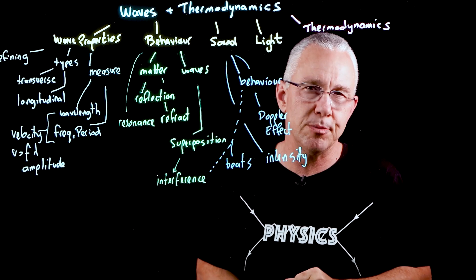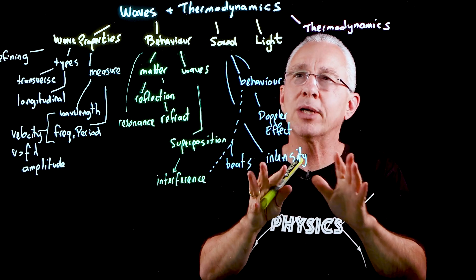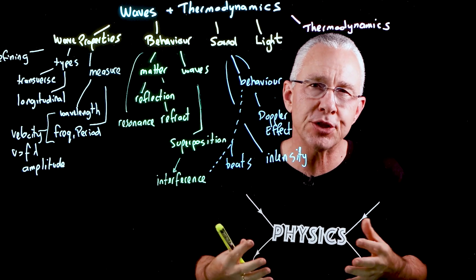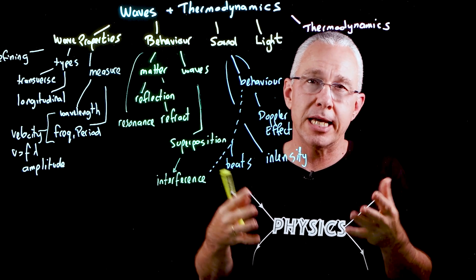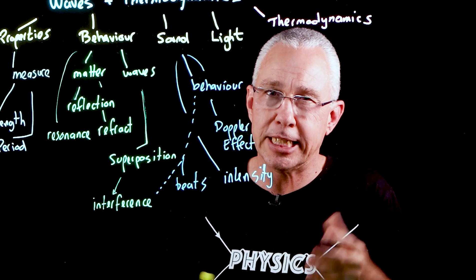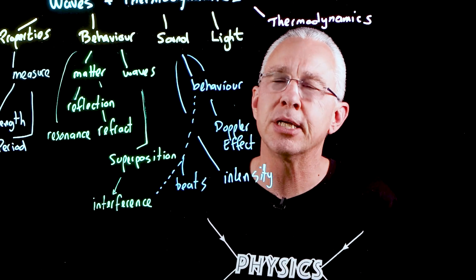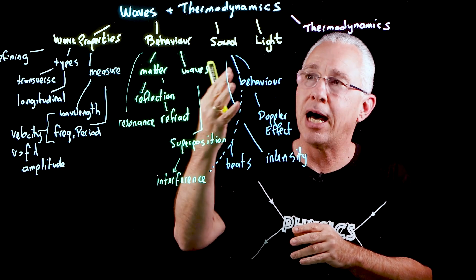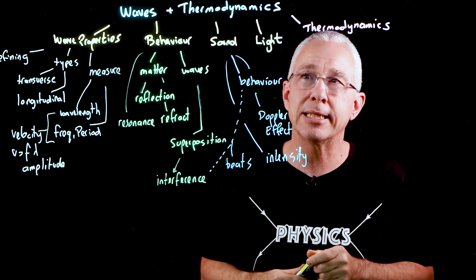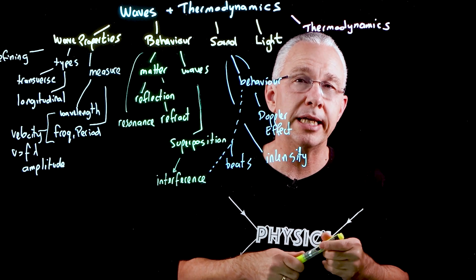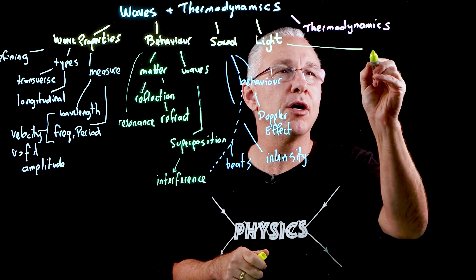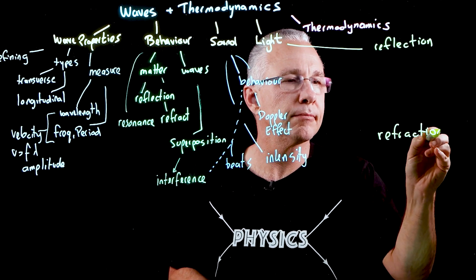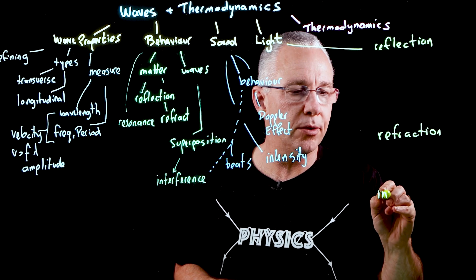We now look at light as an example of electromagnetic radiation — a wave consisting of an alternating electric field and a magnetic field, which is explored further in the HSC course. We use light to illustrate wave behavior through interaction with matter and other waves, focusing on three key phenomena: reflection, refraction, and the inverse square law.